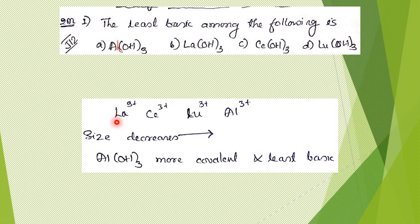If we write lanthanoids in decreasing order of size due to lanthanoid contraction, from La³⁺ to Lu³⁺ the size decreases. Aluminum is a main-group element, so Al³⁺ has the minimum size compared even to Lu³⁺. As size decreases, covalent character increases (from Fajan's rules: higher cationic charge density → more covalent character → less basicity). Therefore Al(OH)₃ is the least basic. Answer: option A — aluminum hydroxide.